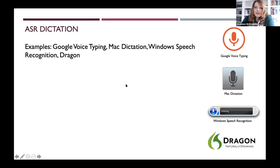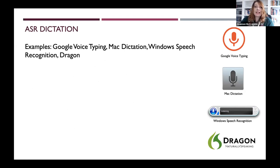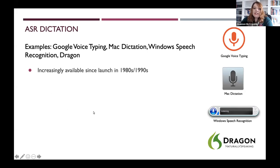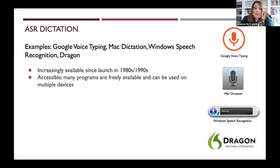There are quite a few different examples of programs: Windows Speech Recognition, Google Voice Typing, Mac Dictation, as well as Dragon, which was one of the front runners back in the 90s when it first came out but is still going fairly strong today. These programs have been increasingly available since their commercial launch in the 1980s and 90s, and today many are available across a wide range of devices and are freely available.